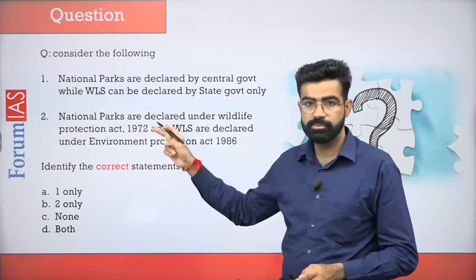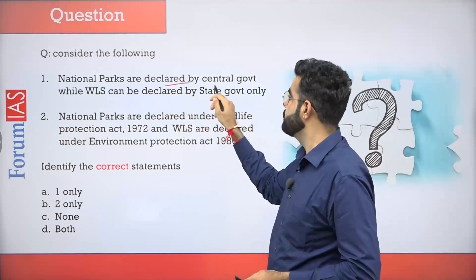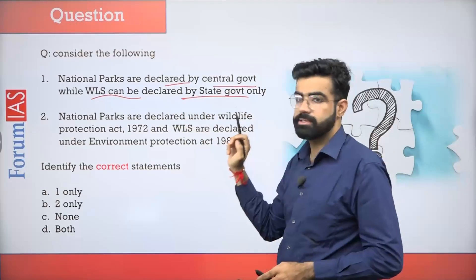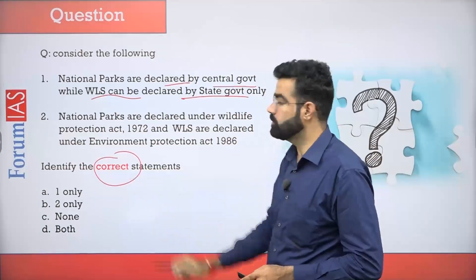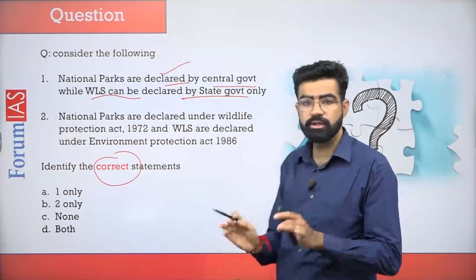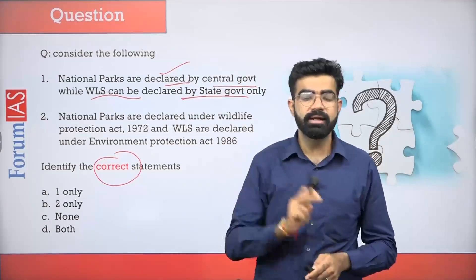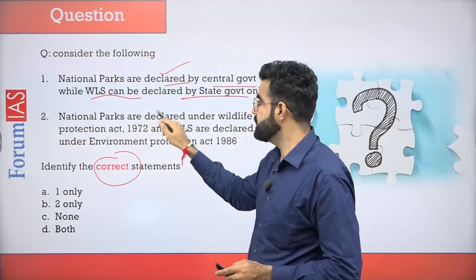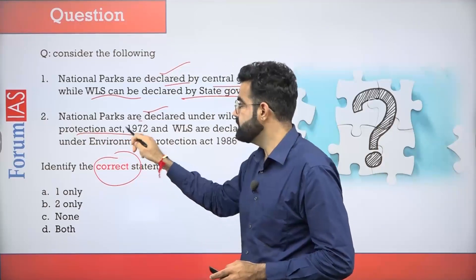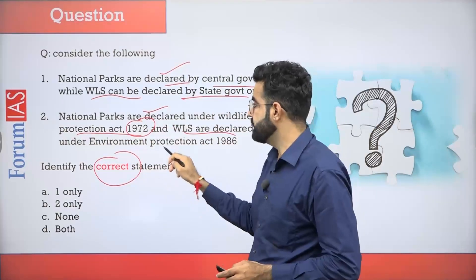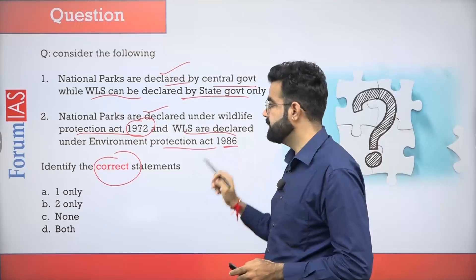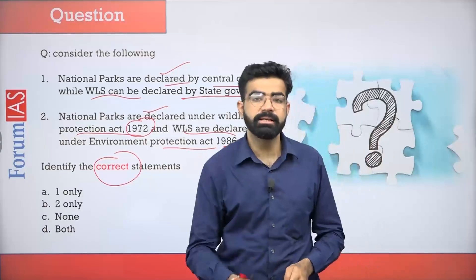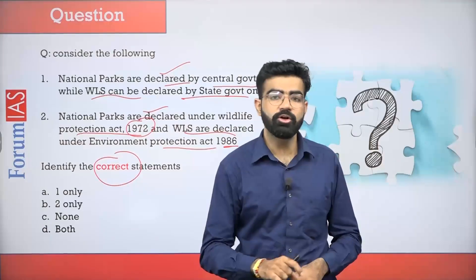First of all, I will ask you a question. The question is: national parks are declared by the central government, while wildlife sanctuaries can be declared by the state government — you have to tell the correct statement. The second statement is: national parks are declared under the Wildlife Protection Act 1972, and wildlife sanctuaries are declared under the Environment Protection Act of 1986. You have to tell the correct statement in the comments section, and at the end of the video the answer will also be given.